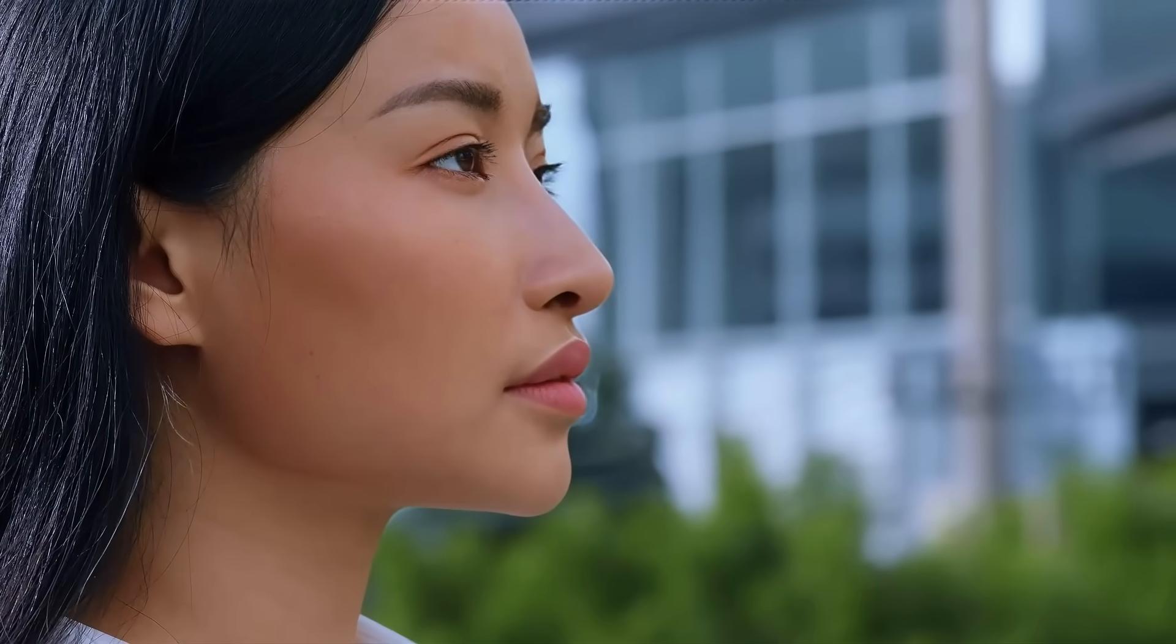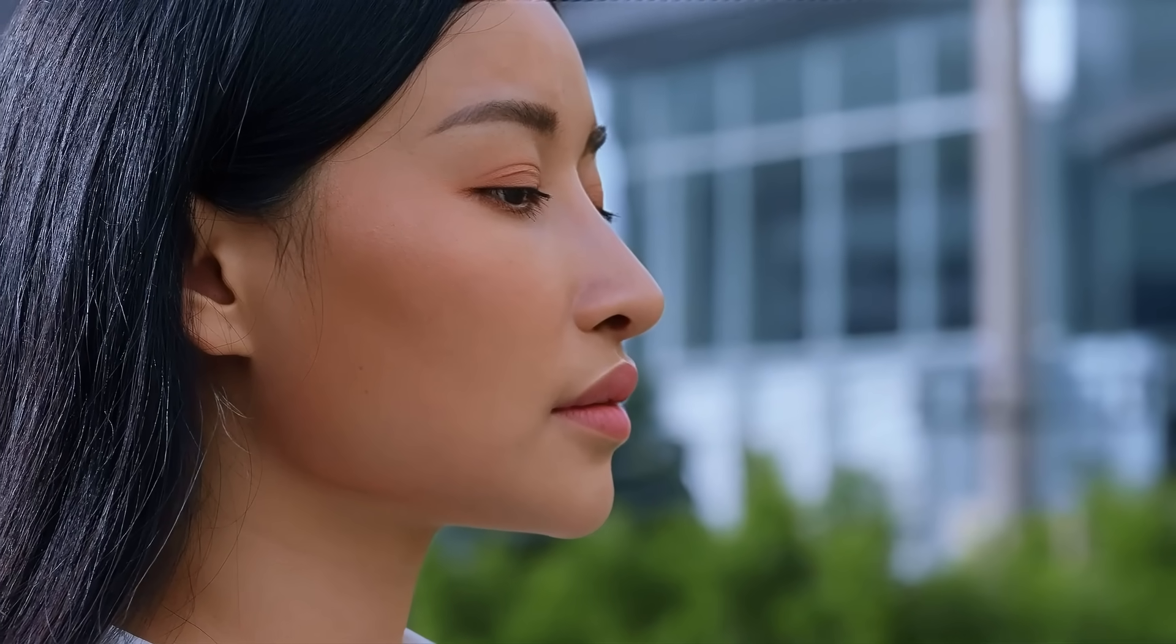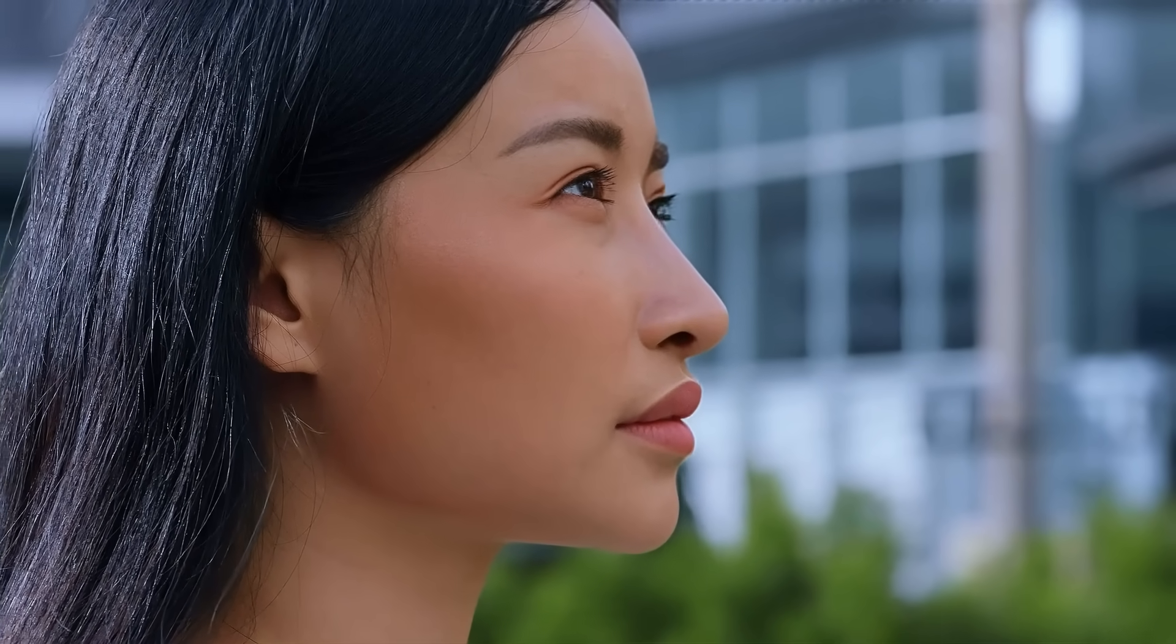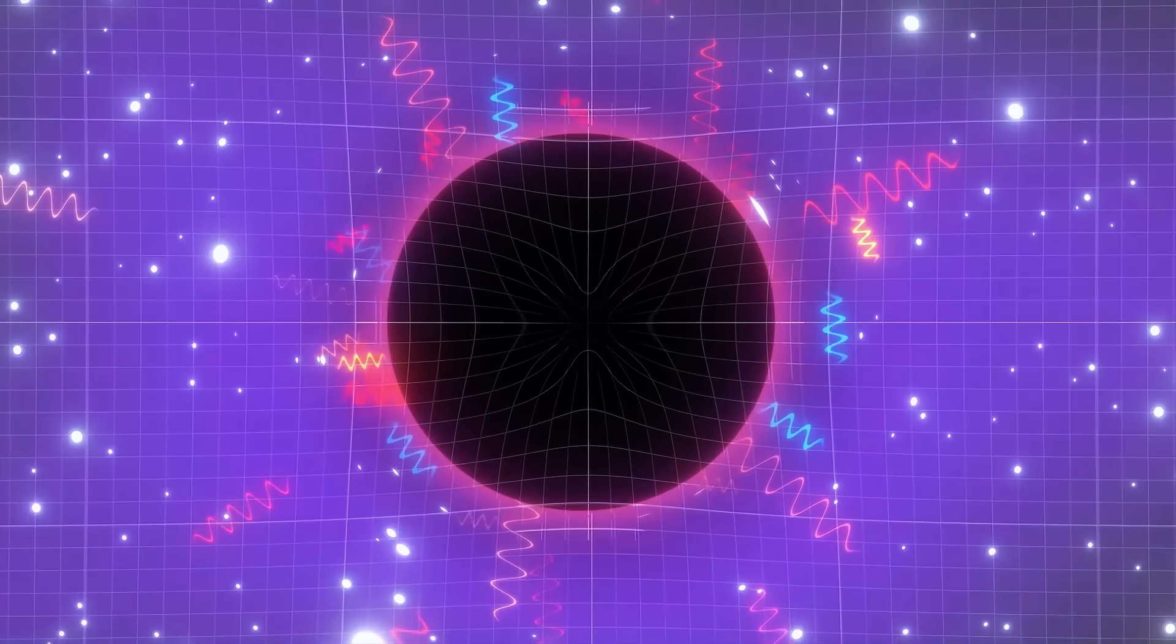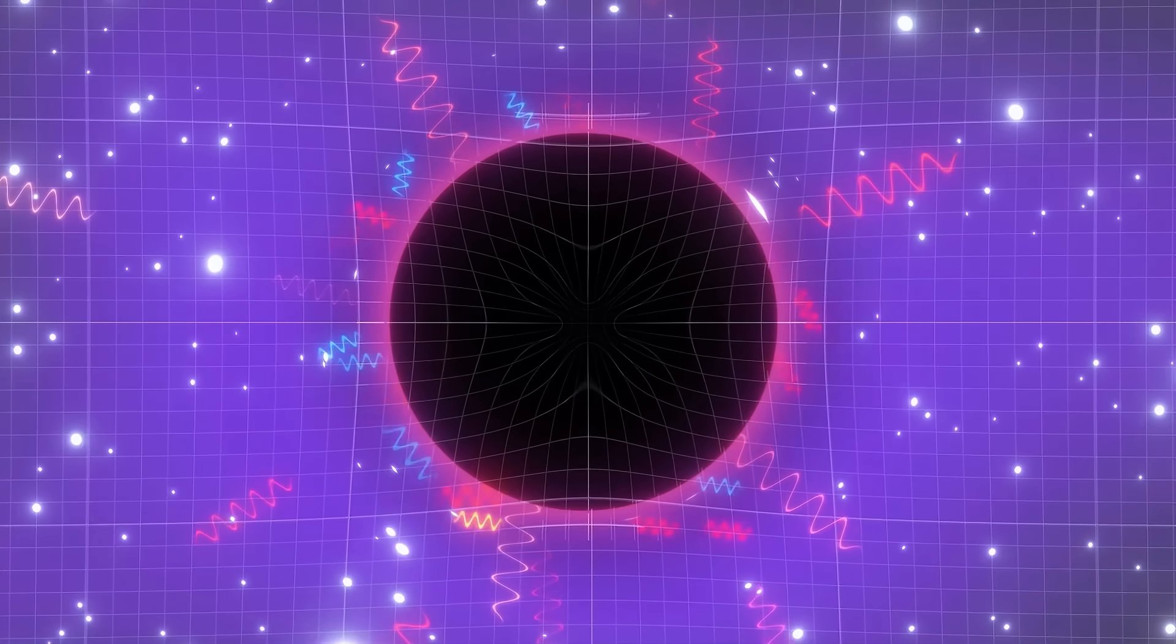This happens everywhere in spacetime. It's happening right now in front of you. But you can't see it because these are virtual particles that appear and disappear so quickly that they are not measurable directly. We can only measure their effects. Near the event horizon of a black hole, this quantum fluctuation is no different. It happens there too.